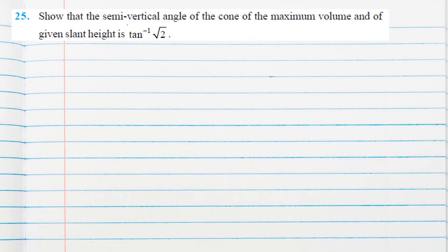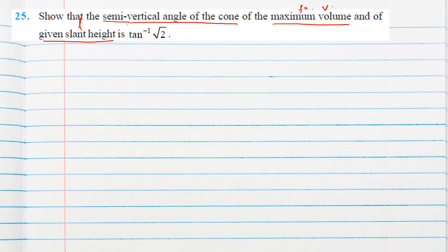The problem is to find the semi-vertical angle of a cone of maximum volume. We need to find the derivative of V with respect to some variable and then the second order derivative. The slant height is given — suppose we call it l, which means it is constant. We need to show that the semi-vertical angle equals tan inverse root 2. We will consider the dimensions of the cone.